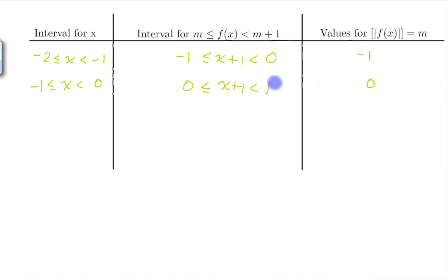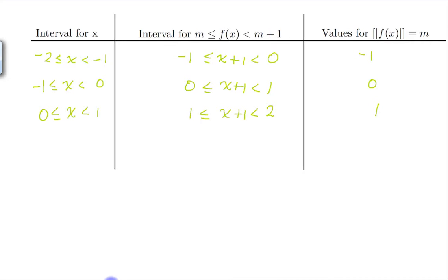And we keep going. Here we need 1 less than or equal to x plus 1 less than 2, and that's going to happen in the interval 0 less than or equal to x less than 1, and the value is 1. Remember we've got to stop at the last interval, so this is our last interval here. Now we translate that to the integral.